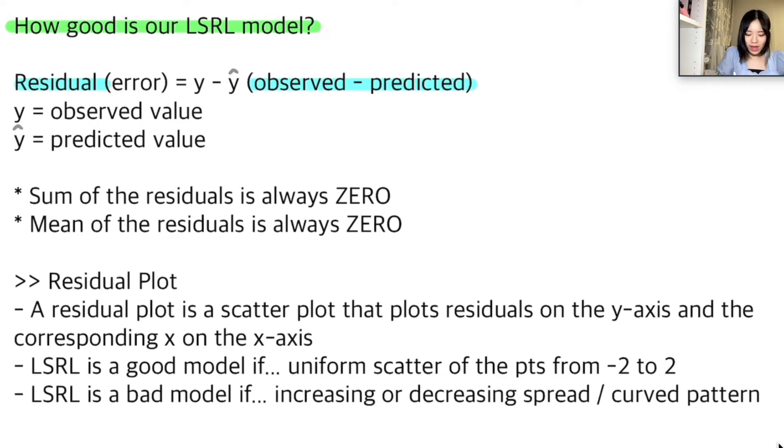And there are some facts about residuals that you definitely need to know. The sum of the residuals is always zero, and the mean of the residuals is also always zero. And the slope of a least-squared regression of the residual on x is also zero, but you don't need to really remember that. It's really just important to remember that the sum and the mean of the residuals is always, always zero.